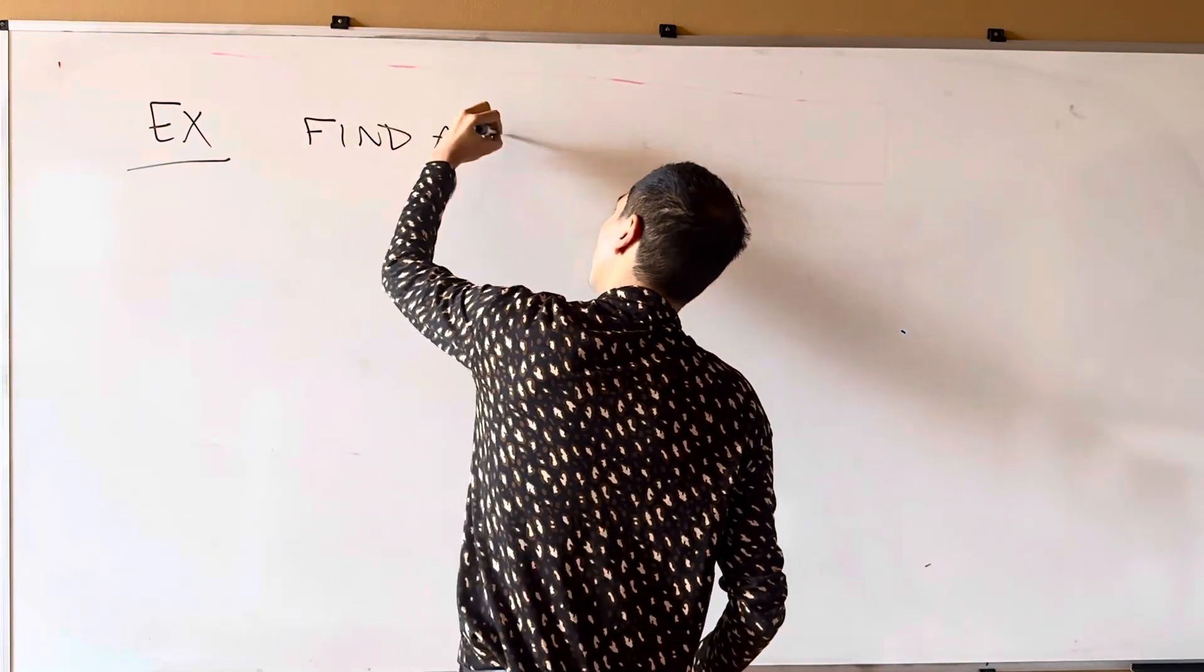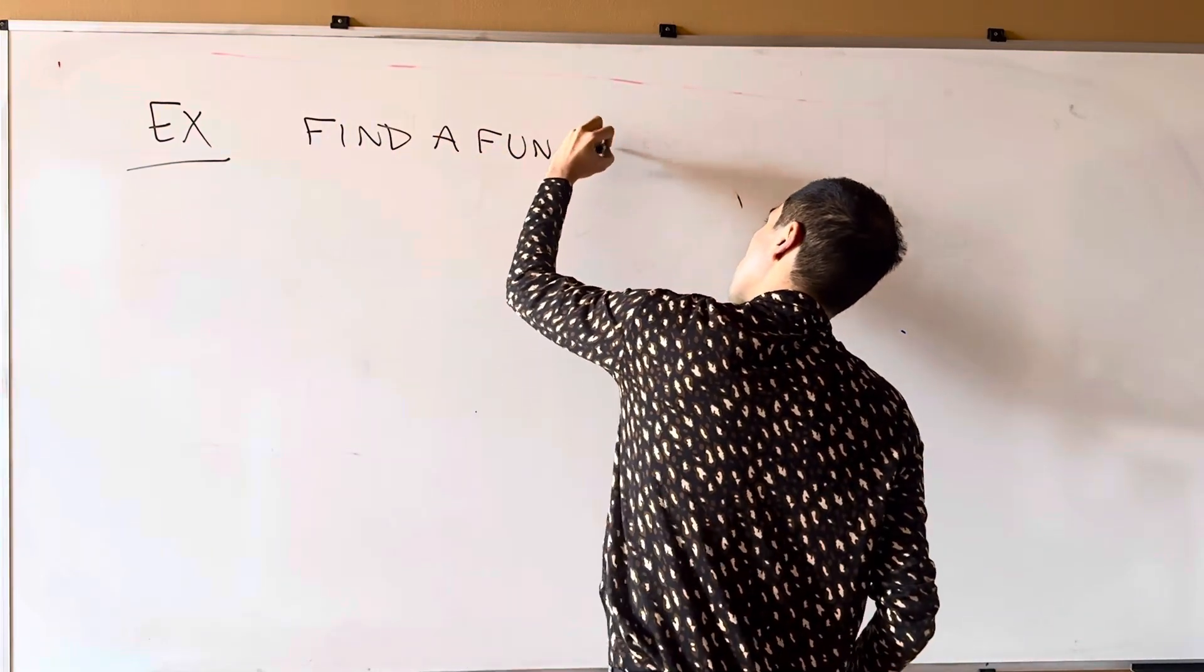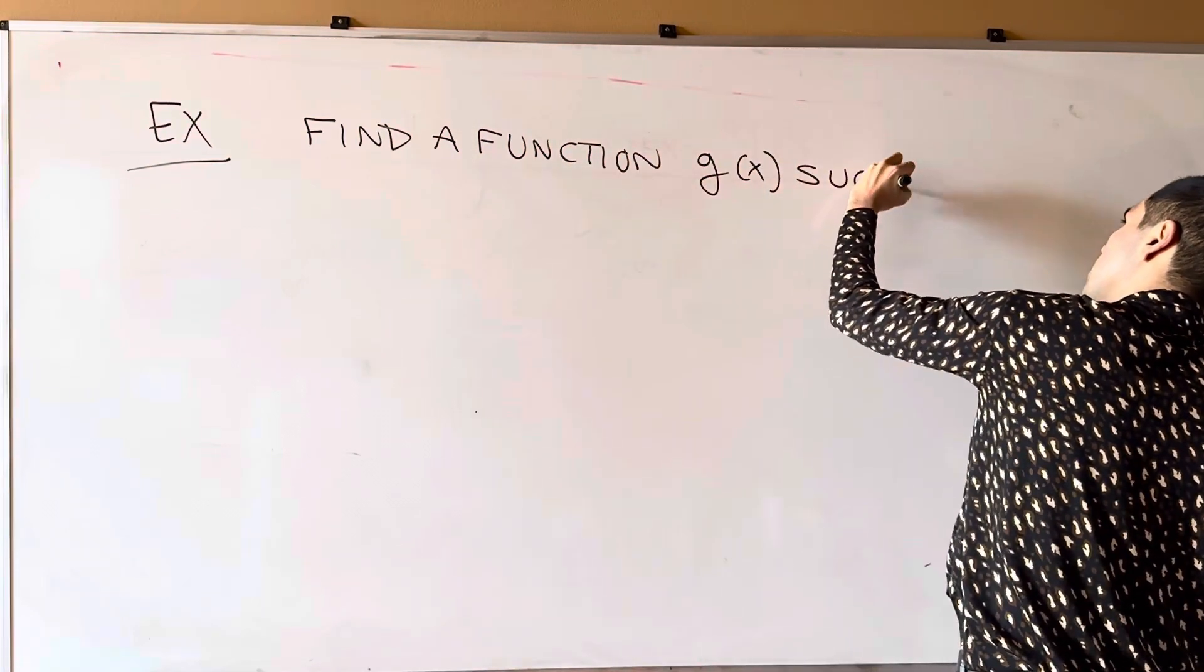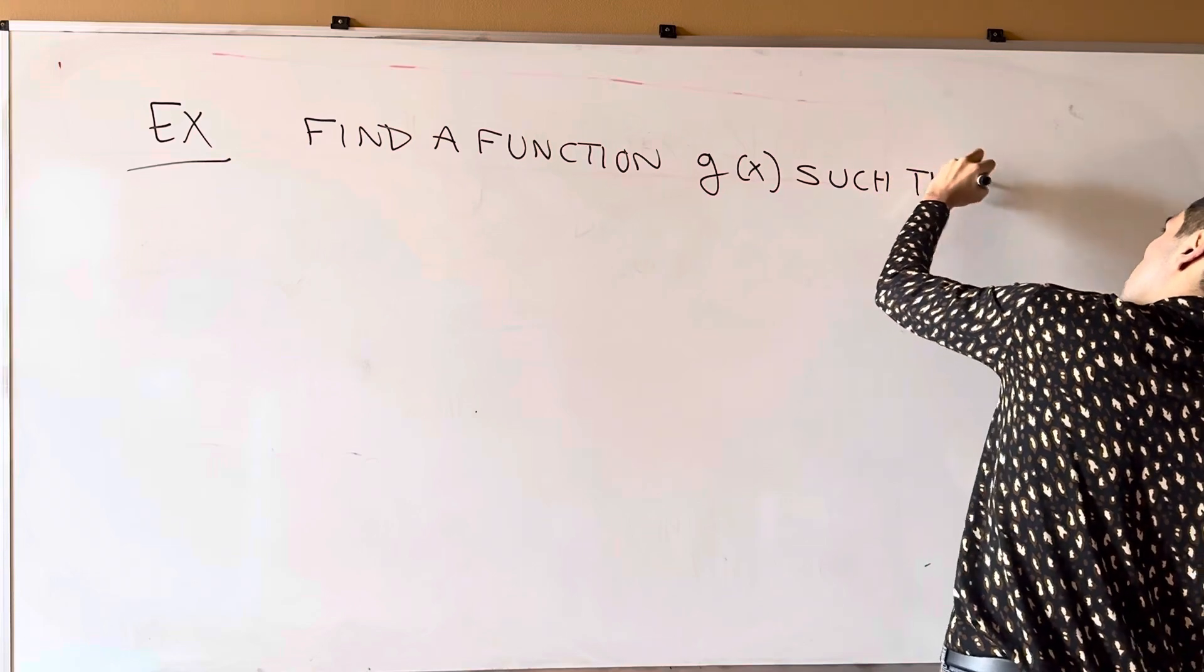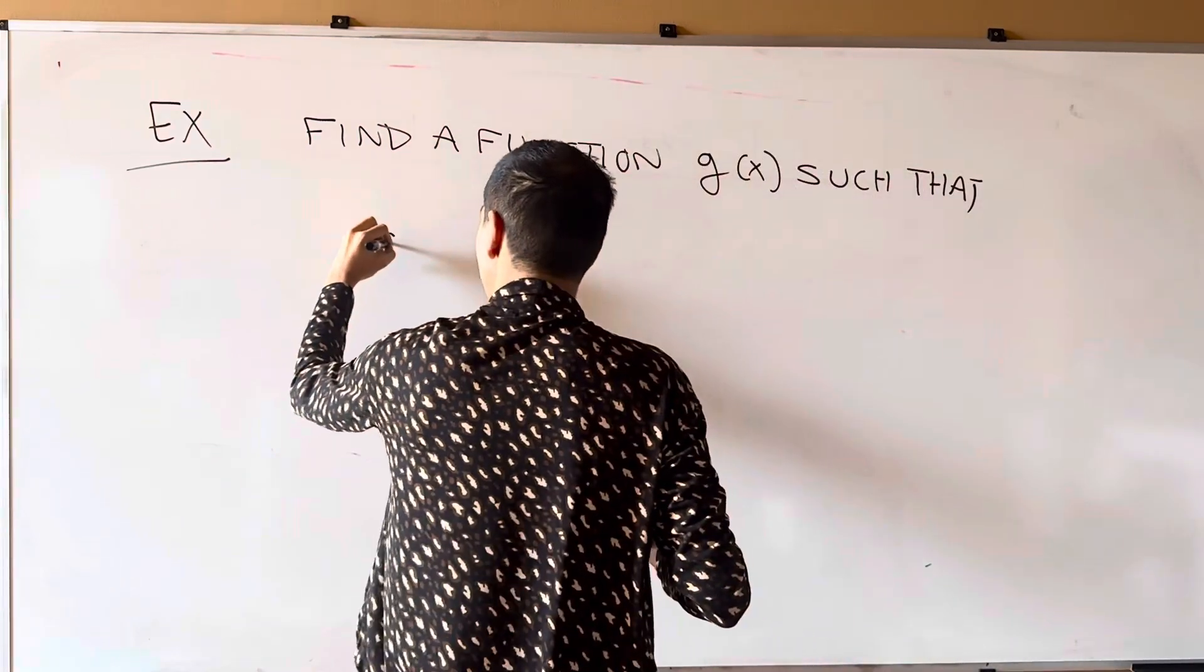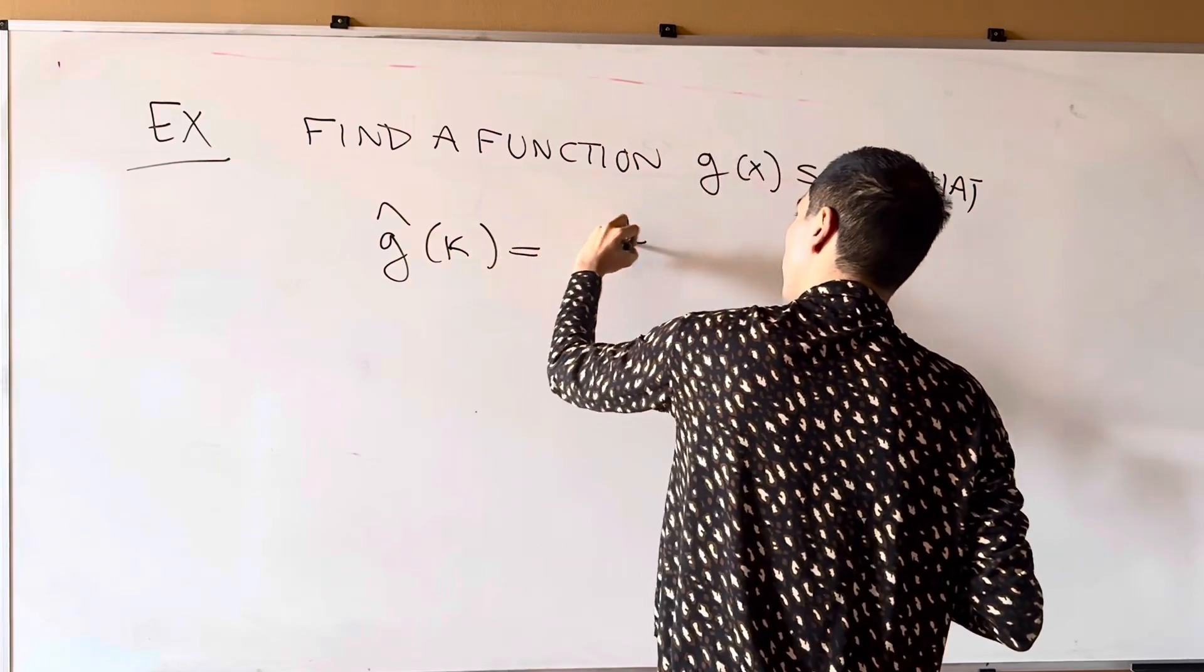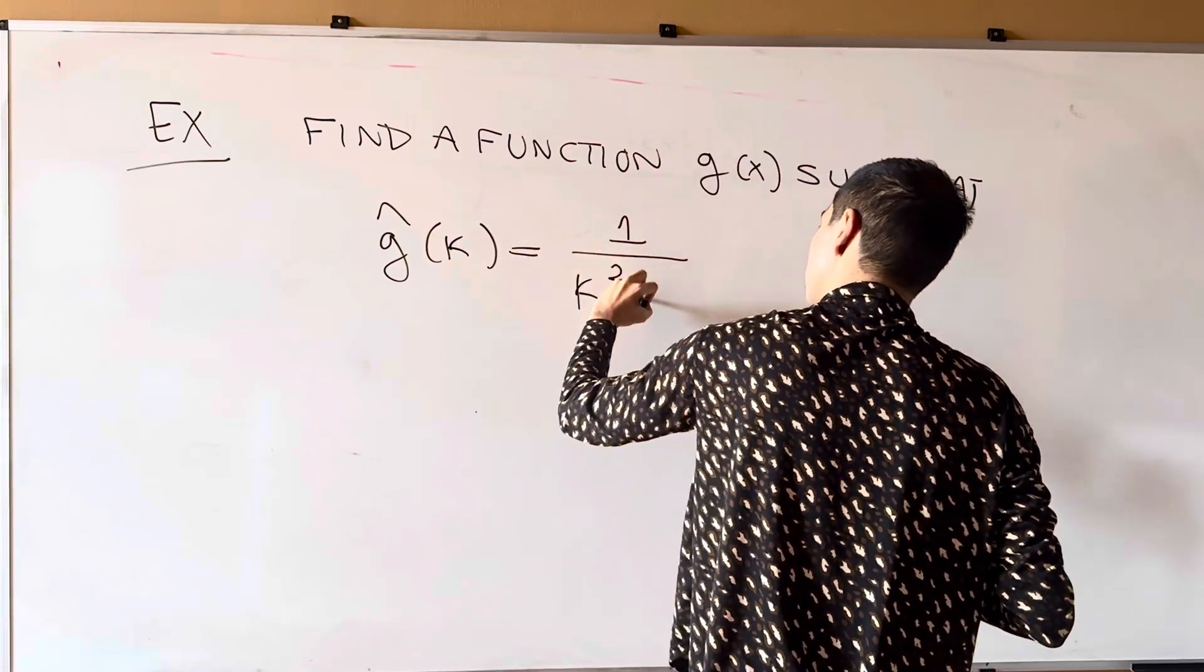whose Fourier transform, so find a function g, g of x, such that g hat of kappa is, let's say, one over kappa squared plus one.